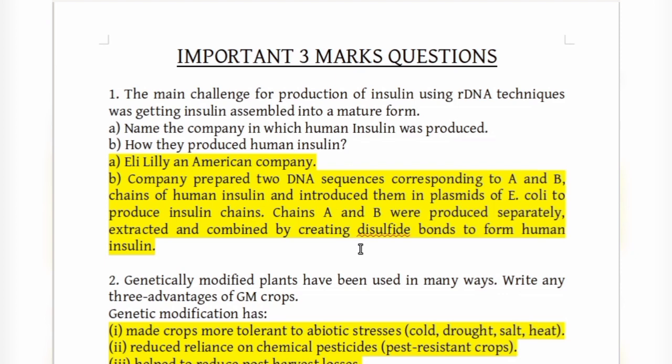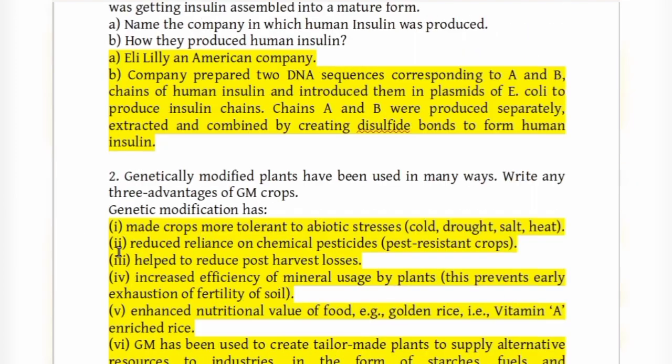The A chain and B chain were produced separately, extracted, and combined by creating disulfide bonds to form human insulin. This is how the company produced human insulin on a large scale.